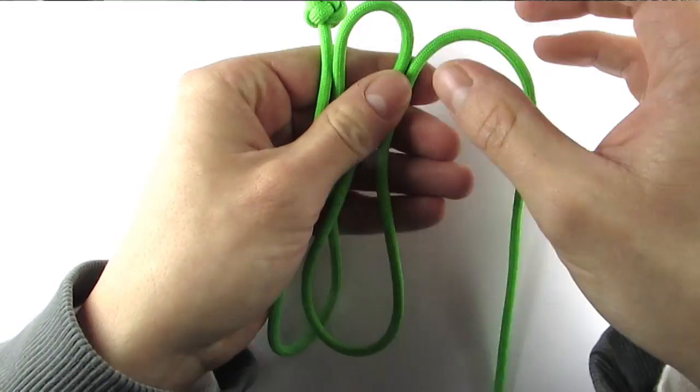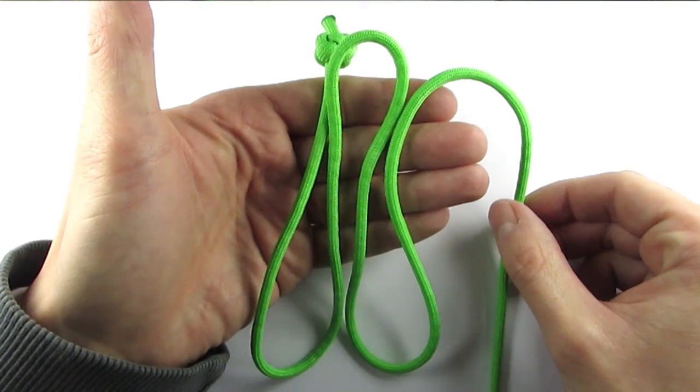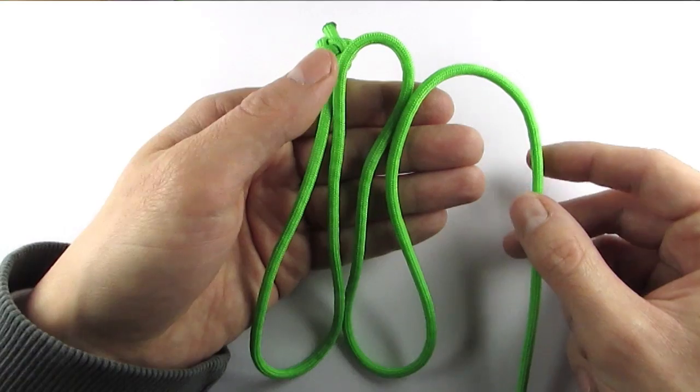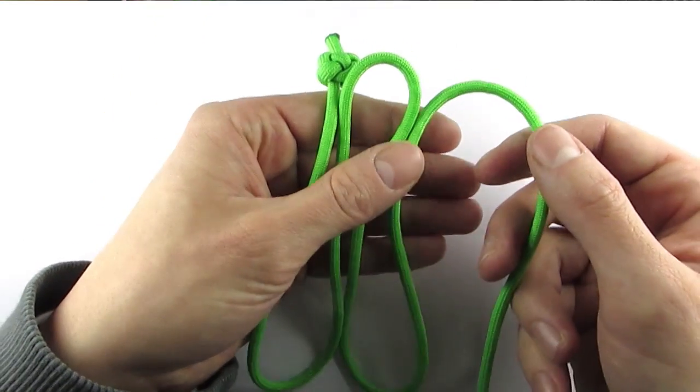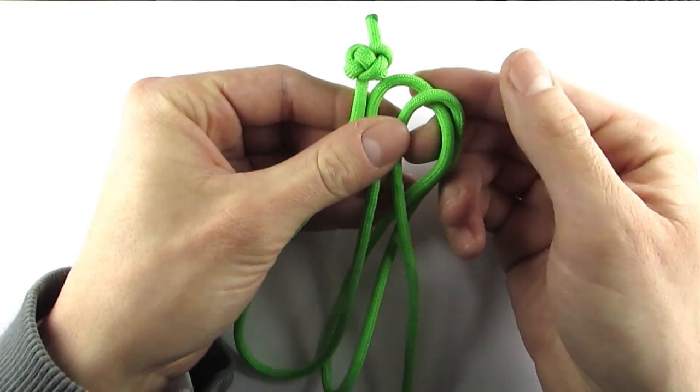This gives us two shapes which will be the two parts of our core. I've then taken our working end, which is the only one we have to work with, and started to weave it over the first cord and under the second.